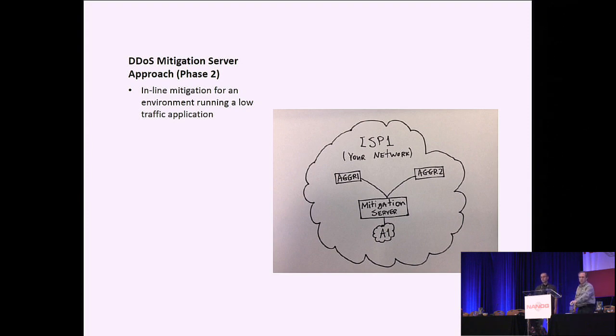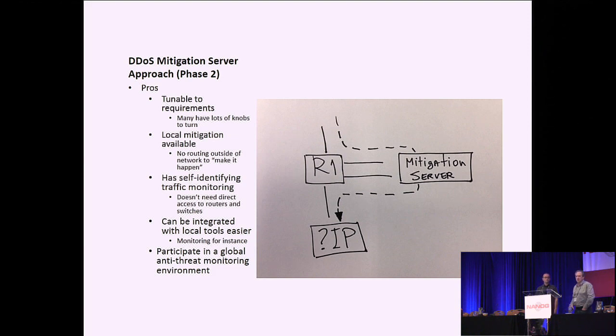And what we found is basically the scrubbing center or the mitigation server works great if you put it in front of a small environment and you're only dealing with small attacks. The pros is the mitigation server is completely in your control. That's usually a good thing. It has flexibility so you can deal with the tuning. It has self-identifying properties inside of it, which means that nobody from the outside has to have access to your network to see if an attack is occurring because it's all done within the box itself and that makes a lot of sense.